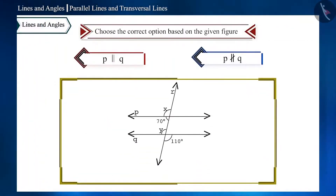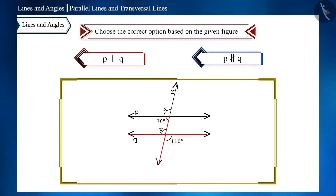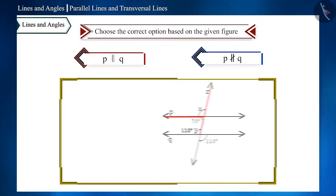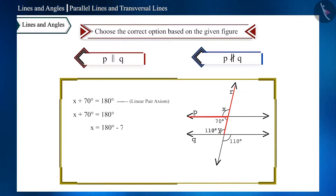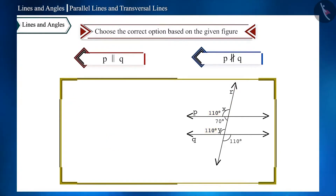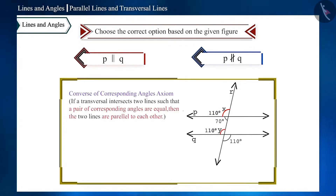Next question: using the information in the figure, choose the correct option. One angle is 70 degrees and another is 110 degrees. Since vertically opposite angles are equal, both pairs become 110 degrees. These two angles form a linear pair, giving X equal to 110 degrees. Since both X and Y have the same measure, using the converse of the corresponding angles axiom, we can say the two lines are parallel. Therefore option 1 is correct.